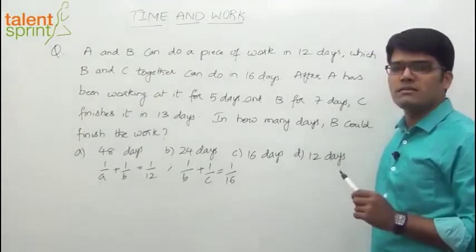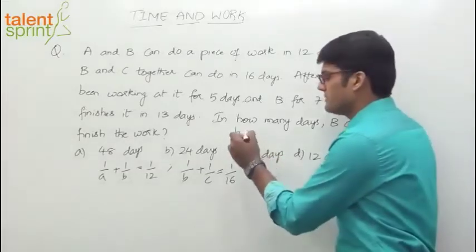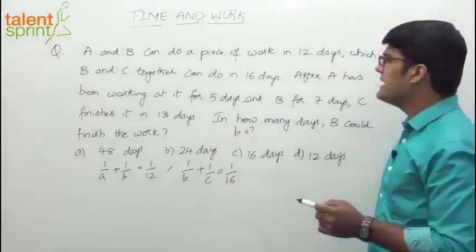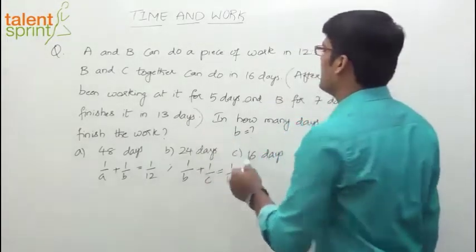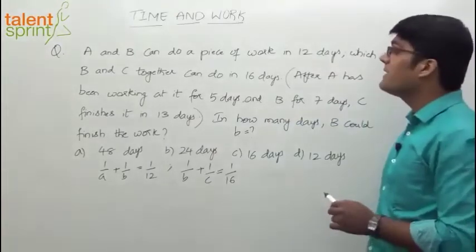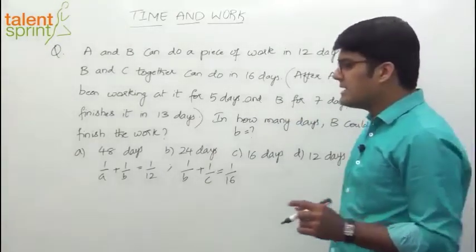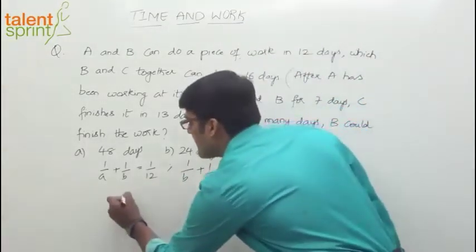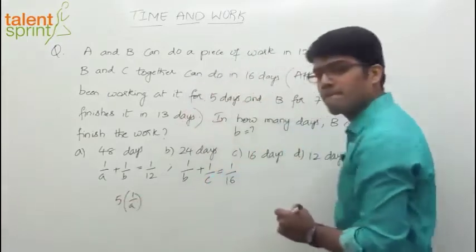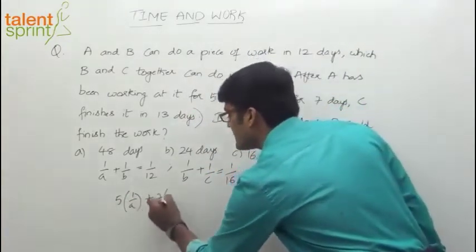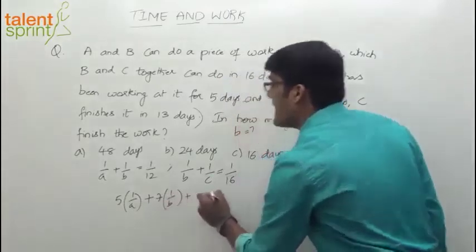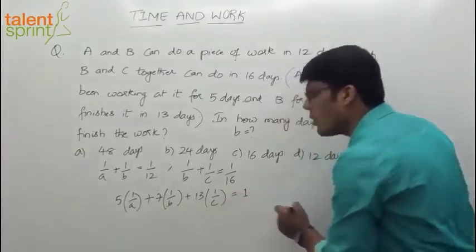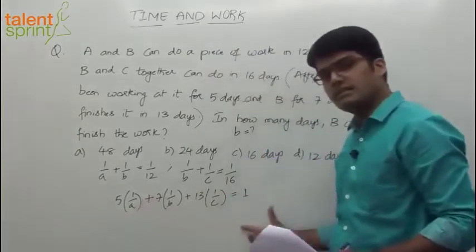Now in how many days can B alone finish the work? We need to find out B equals what? In our case, number of days required by B is small b. Now let's write an equation for this statement. What does it say? After A has been working on it for 5 days, A has worked for 5 days. See, how much can A do in 1 day? 1 by A. A has worked for 5 days, so how much we get over? 5 into 1 by A. B for 7 days, how much we get over? 7 into 1 by B. And C finishes it in 13 days: 13 into 1 by C. This is equal to what? Total over 1. This is the total work.